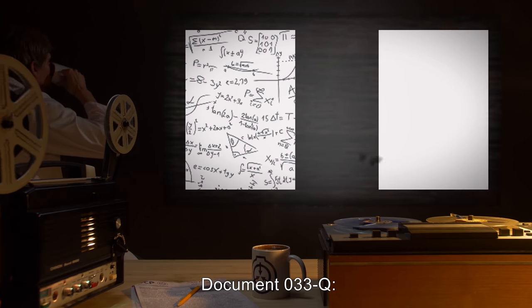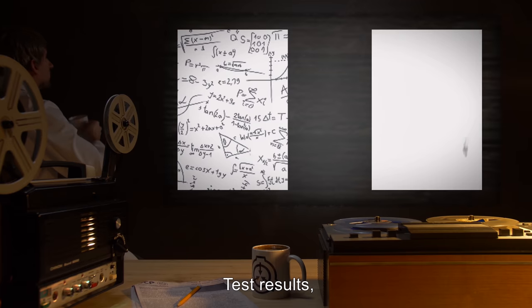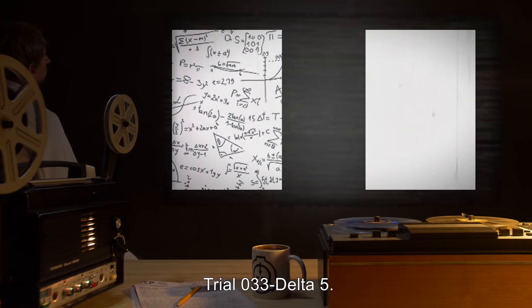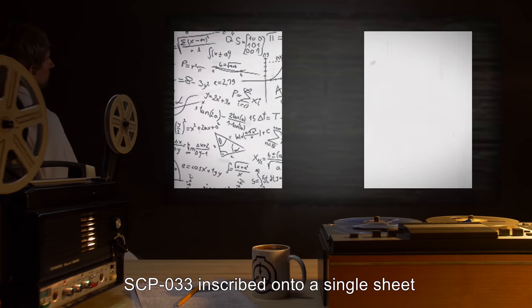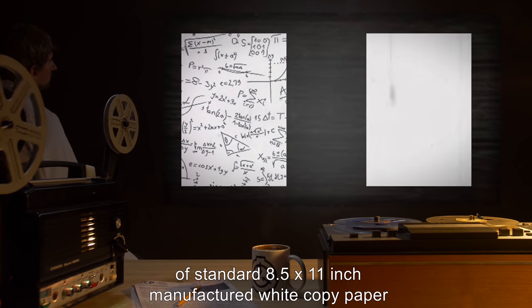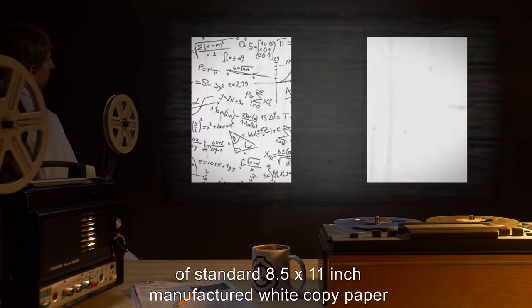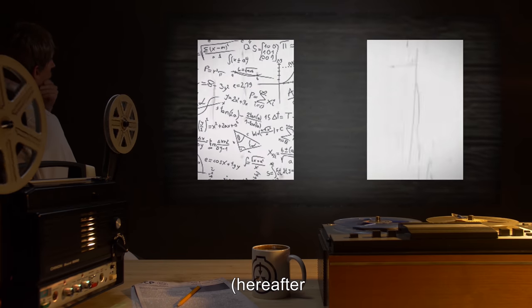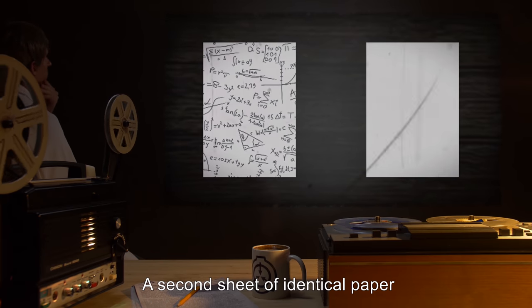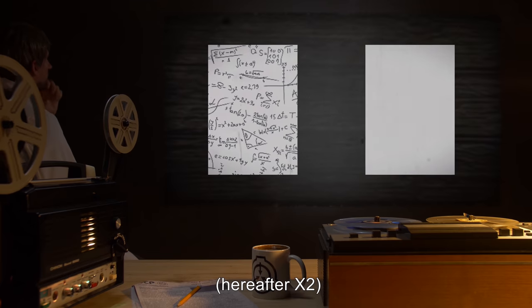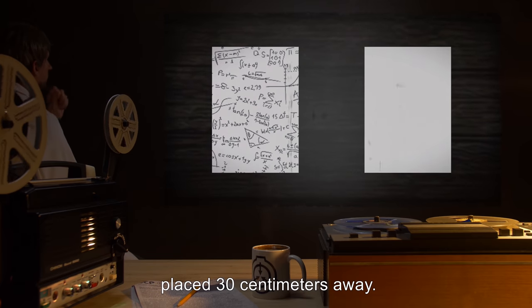Document 033-Q Test Results. Trial 033-DELTA-5. SCP-033 inscribed onto a single sheet of standard 8.5 by 11 inch manufactured white copy paper, hereafter X-1. A second sheet of identical paper, hereafter X-2, placed 30 centimeters away.